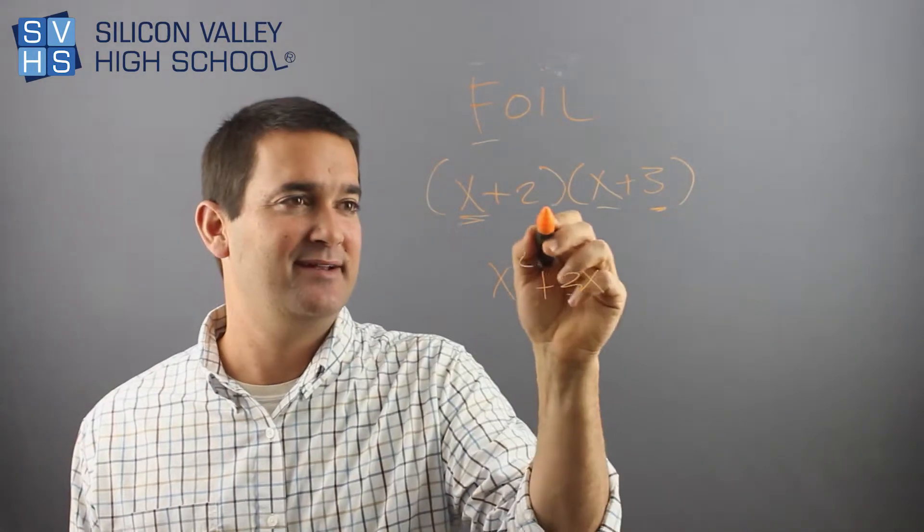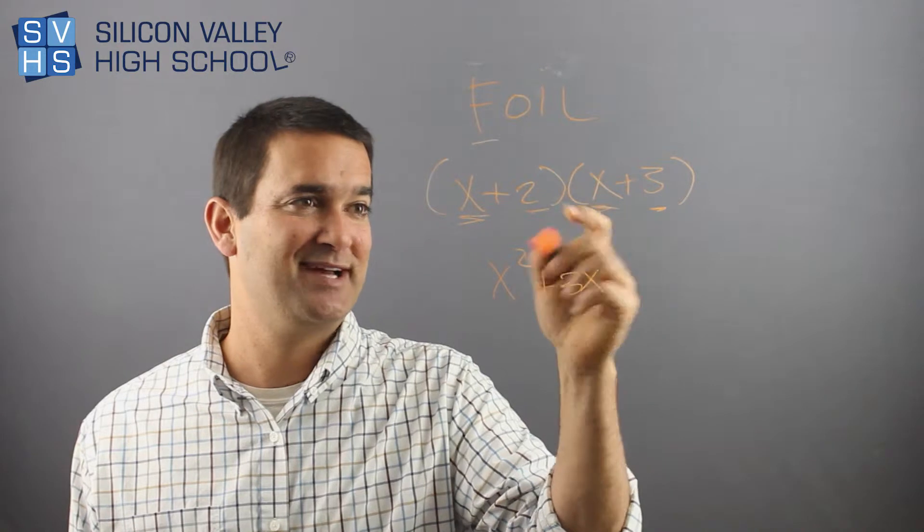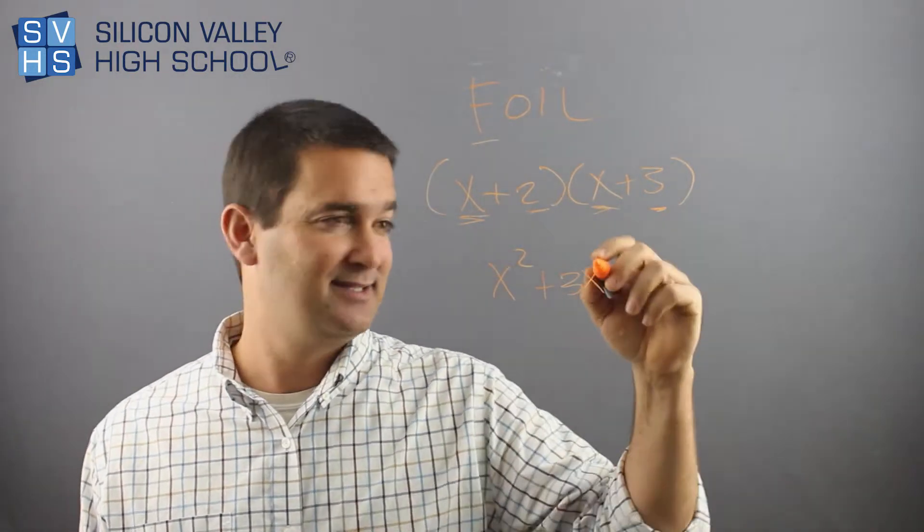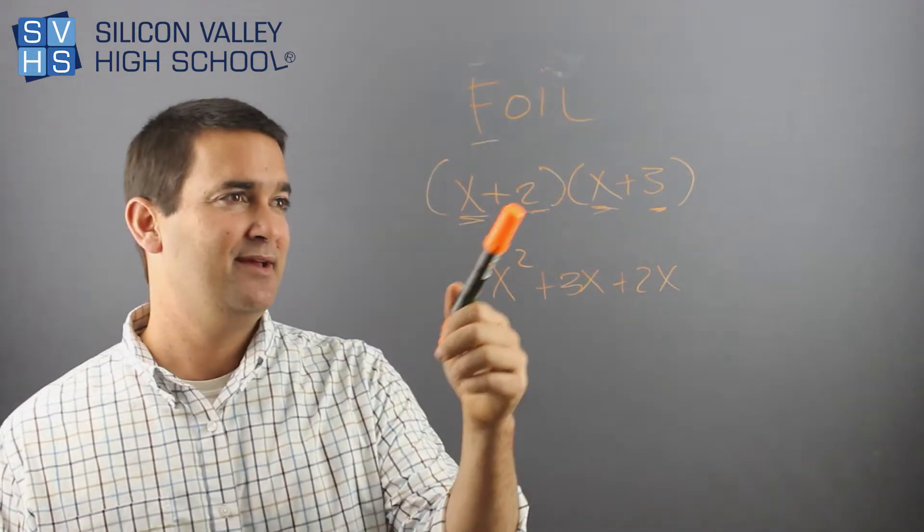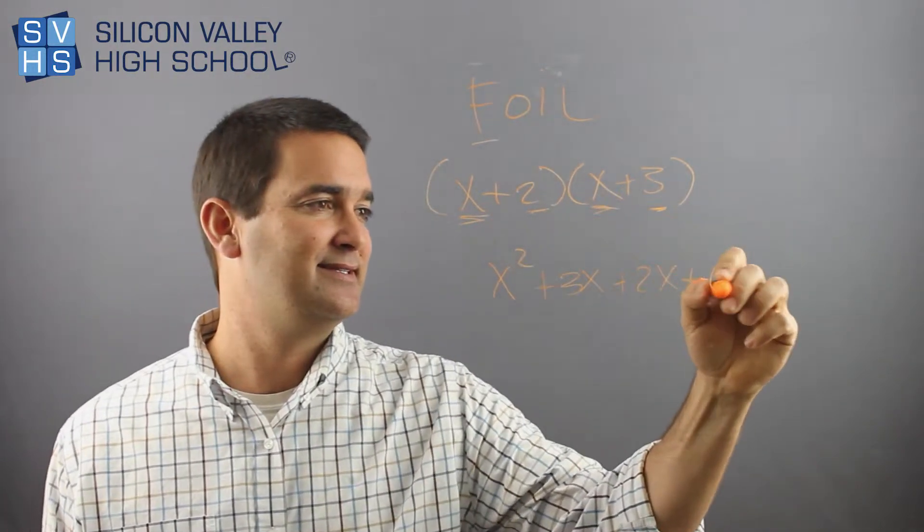Then inside times inside, innermost guy, innermost guy. Positive 2 times X is 2X. And then you do last times last, which would be 2 times 3 is 6.